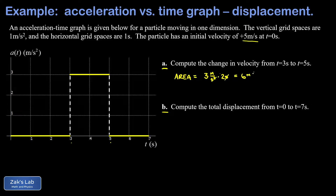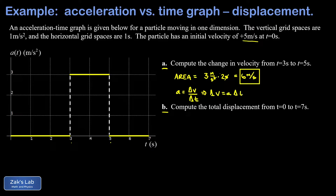The width is two seconds, and one factor of seconds cancels, giving a change in velocity of six meters per second. As an alternative solution, since acceleration is constant: the change in velocity equals the constant acceleration multiplied by the time duration, delta t. That's three meters per second squared times two seconds, arriving at the same answer of six meters per second.